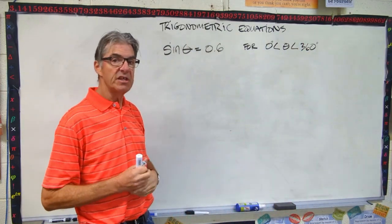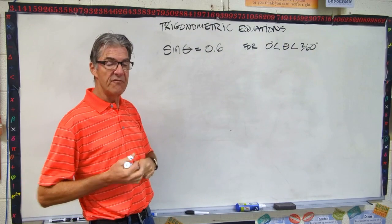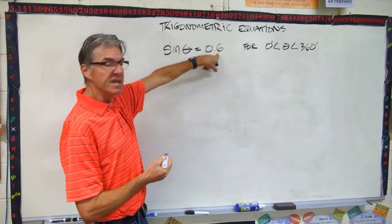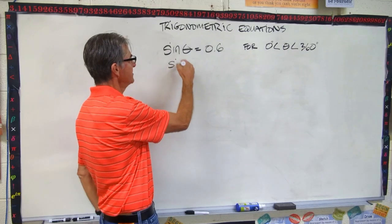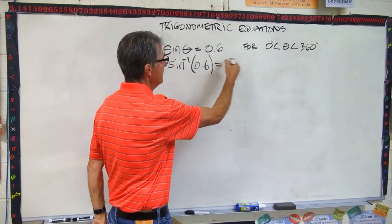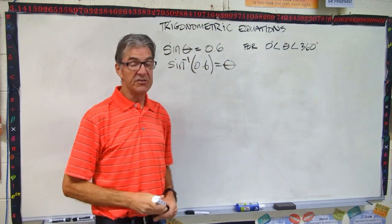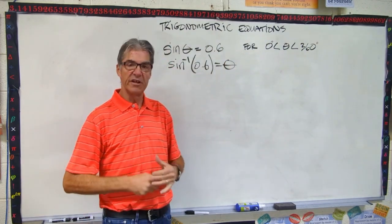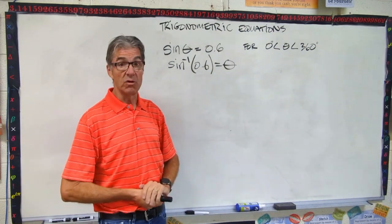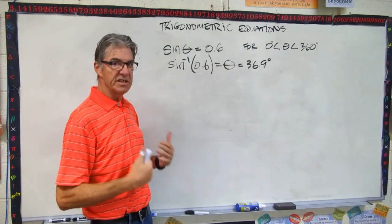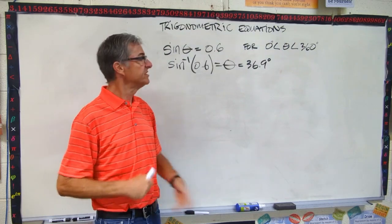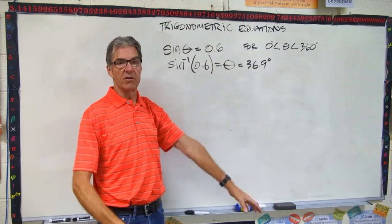Let's take a look at the first easiest one to find. Remember, when you know what sine theta equals, you can take the inverse of the value and that will give you theta. So go ahead and pull out your calculator — you're going to need to do a bunch of calculations with this video. If your calculator was set to degrees, then you got 36.9 degrees.